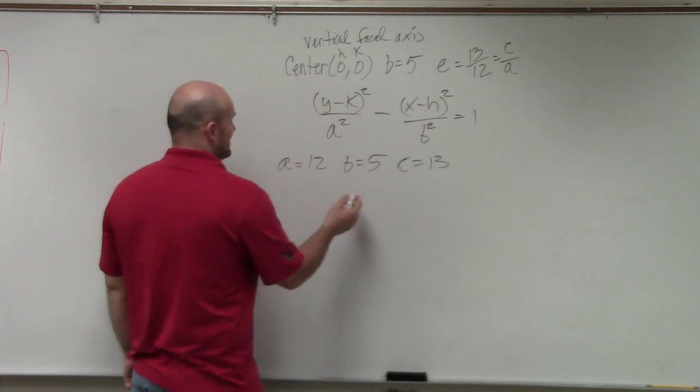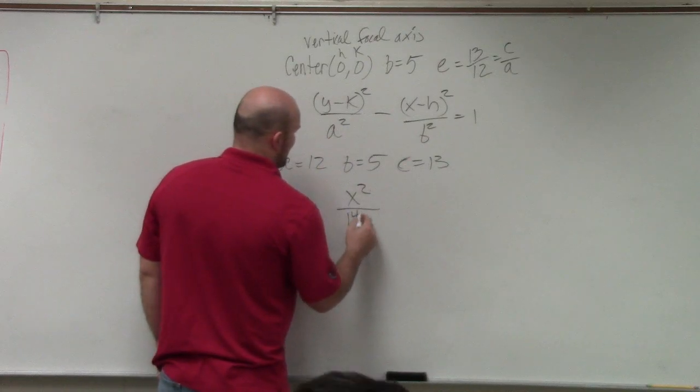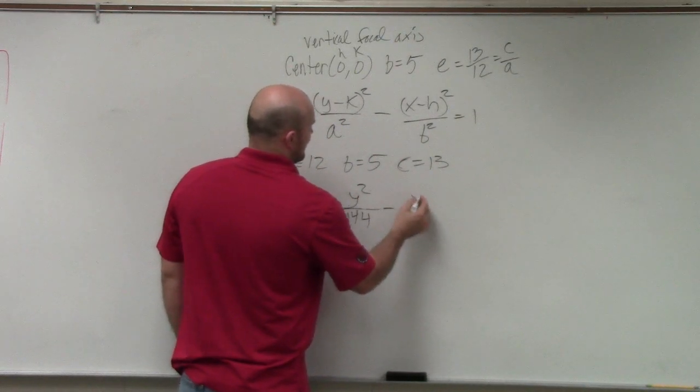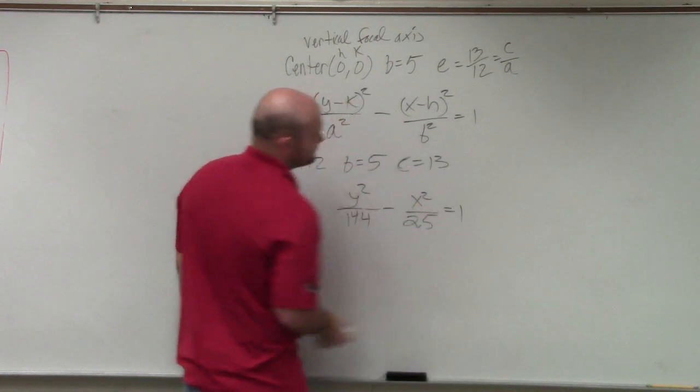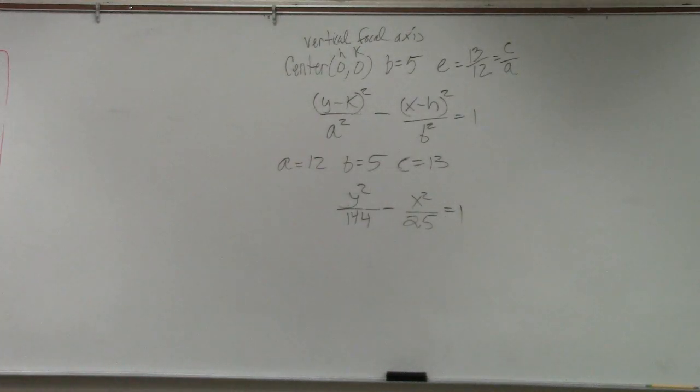So all we need to do then is y squared over 12 squared is 144, minus x squared over b squared, which is 25, equals 1. Done. Well, I didn't even make a decision, but it was just straightforward.